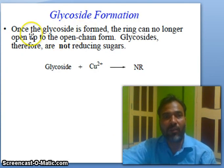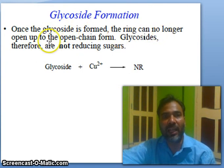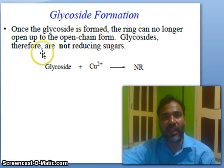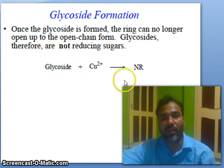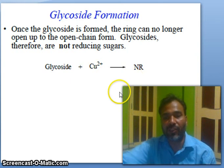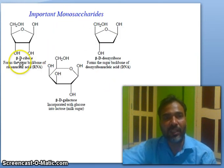Once the glycoside is formed, the ring can no longer open up to the open-chain form. Glycosides therefore are not reducing sugars — they do not react with copper(II) solution. Important monosaccharides include beta-D-ribose, beta-D-galactose, and beta-D-deoxyribose.